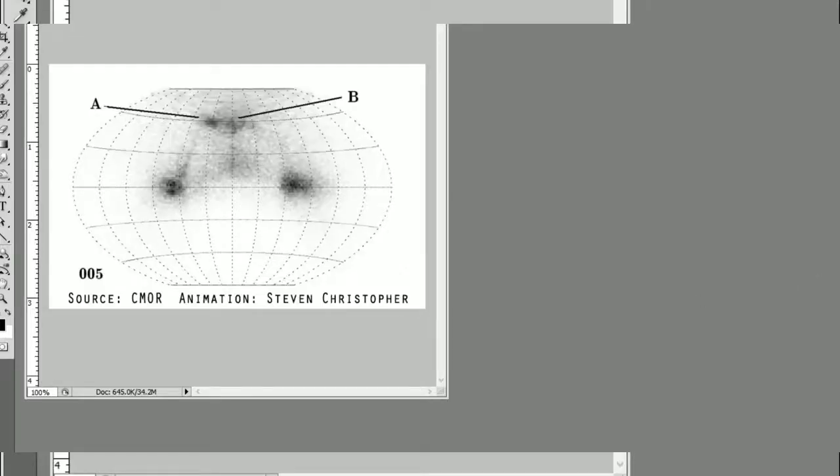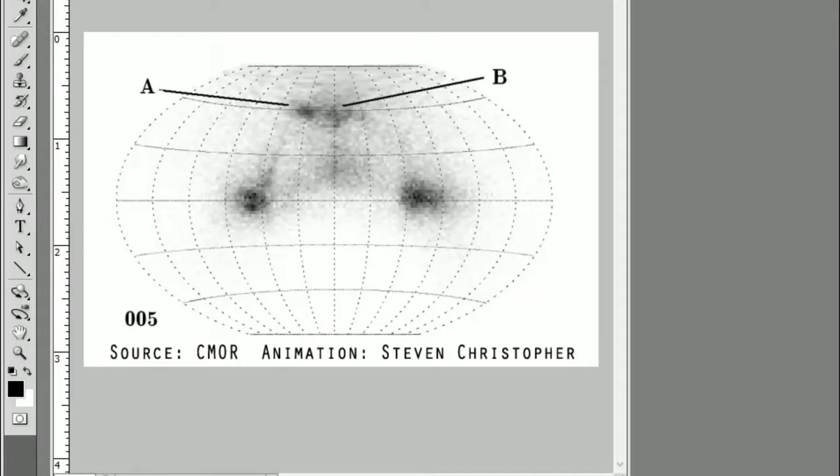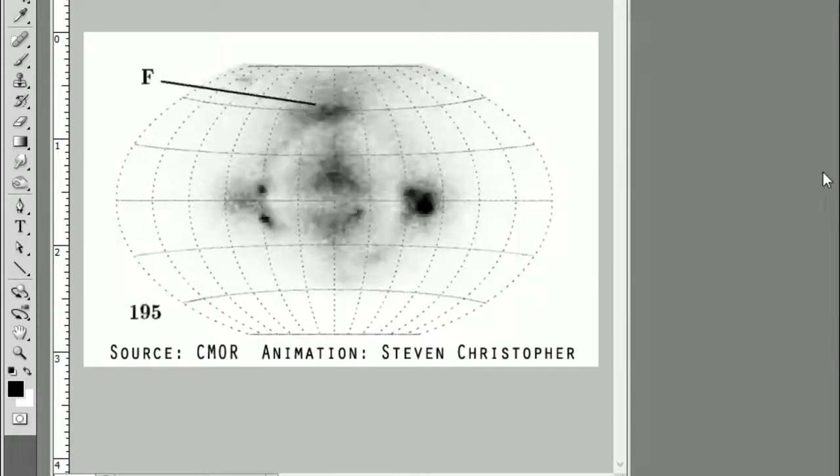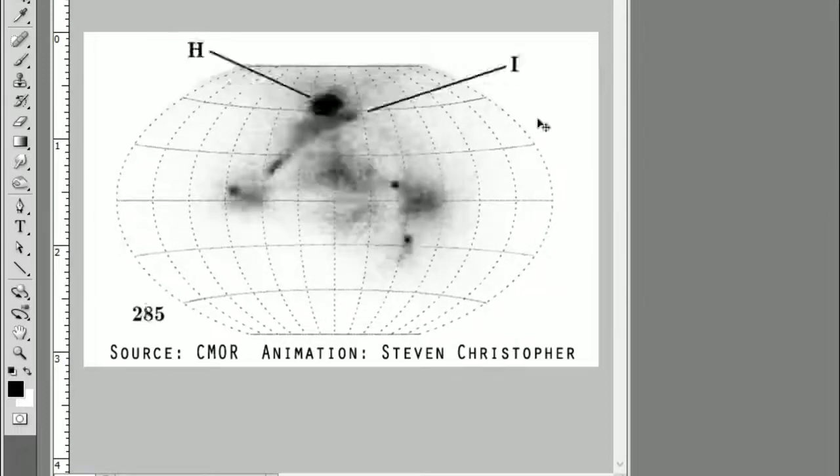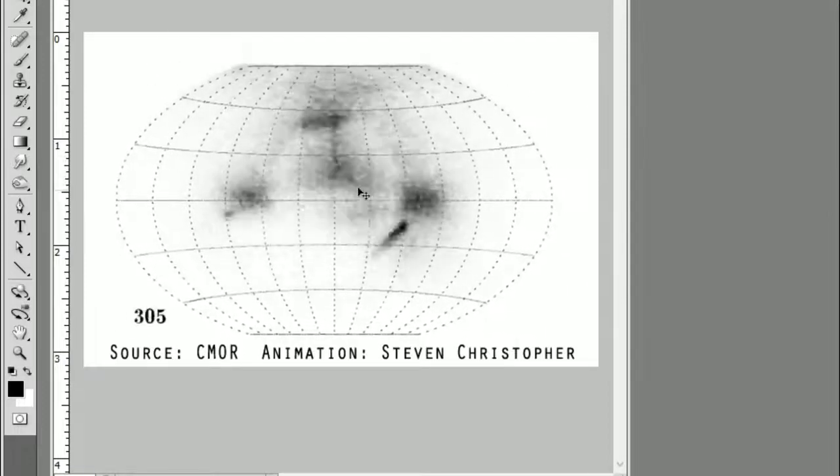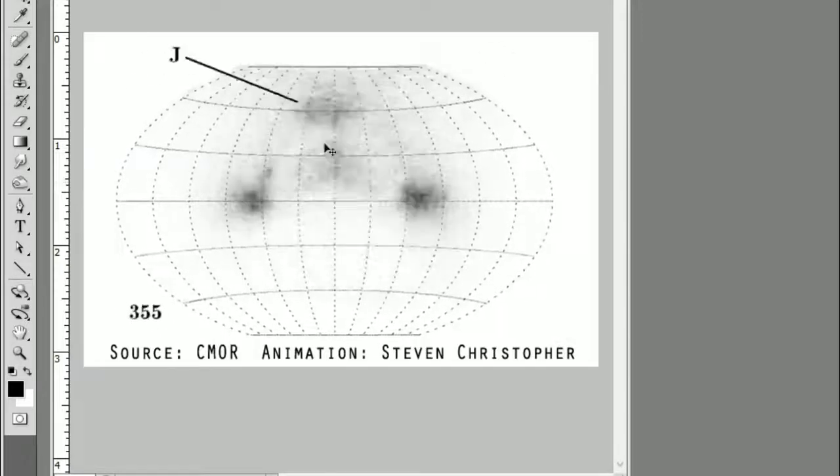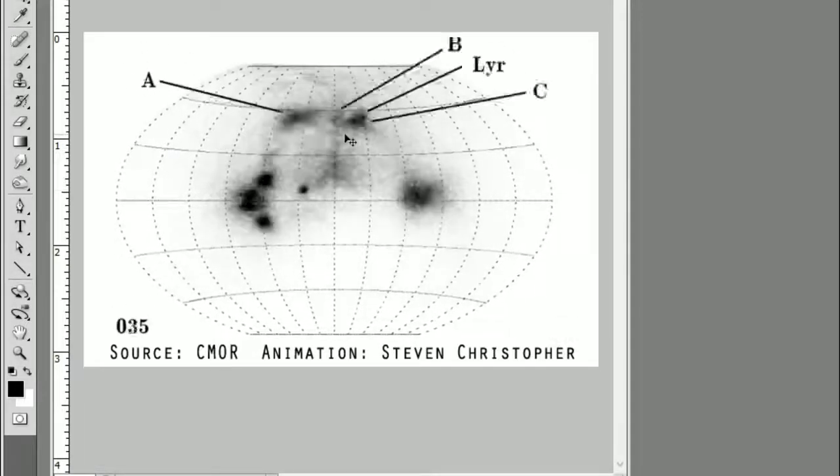I'll play that for you right now. There we go. Now look what we have here. You see the north apex of the octahedron pretty much stays visible throughout the whole year.